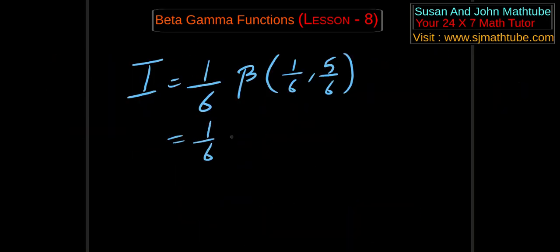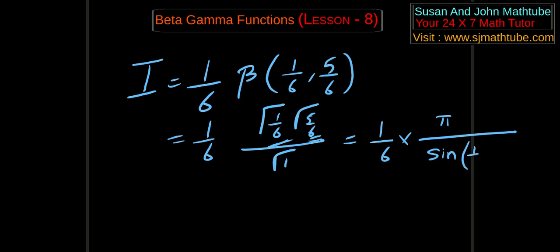And we convert beta into gamma. So gamma 1 by 6, gamma 5 by 6, divided by gamma (1 by 6 plus 5 by 6), that is gamma 1. And in the last video, we learned what to do when the sum is 1. What should we do? Pi by sine 1 by 6 pi. And that will be 1 by 6 pi by, what is sine 30 degree, 1 by 2. So that gives me pi by 3.